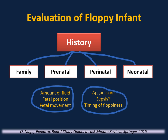The most important step in making the diagnosis of hypotonia is a detailed history and careful physical examination. Family history is critical. Perinatal history is very important — ask about the amount of amniotic fluid, fetal position, and fetal movement. For example, a weak infant not swallowing enough amniotic fluid will result in polyhydramnios. Breech presentation can be associated with cervical injuries. Ask about prenatal exposure to toxins or infections, and the Apgar score — hypoxic ischemic encephalopathy is associated with a low Apgar score.